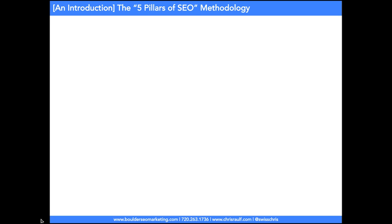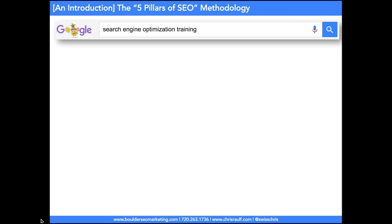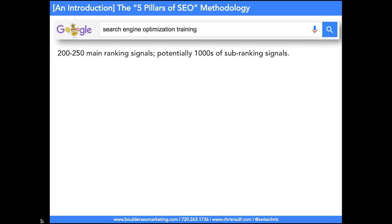Let me introduce you to the five pillars of SEO methodology that I developed over the years since starting my own search engine optimization business. If you go to Google and type in a search term — in this case, 'search engine optimization training' — Google will put this search term through its algorithm, which consists of about 200 to 250 main ranking signals and potentially thousands of sub-ranking signals that take many things into consideration before Google will actually show you organic search listings.